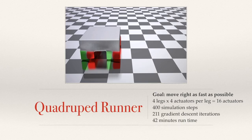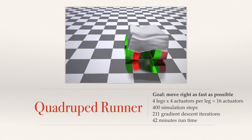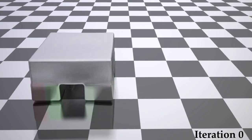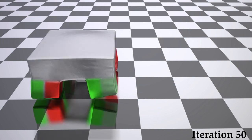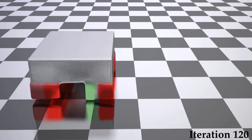In the next example, we control a 3D quadruped runner. It has four legs with four actuators each. Its controller is optimized in 211 gradient descent iterations.